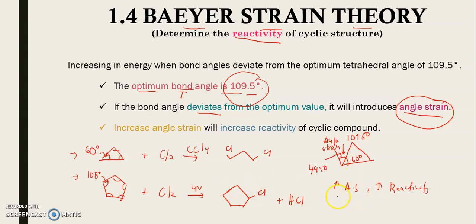This means the larger the angle strain value, the more reactive the compound. For cyclopentane, the bond angle is 108 degrees. Optimum is 109.5, so 109.5 minus 108 gives an angle strain of 1.5 degrees. If you compare this with cyclopropane's value, the angle strain for cyclopentane is much lower. When cyclopentane has lower angle strain, it means it is less reactive or more stable compared to cyclopropane.